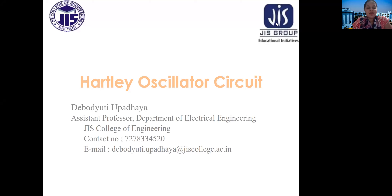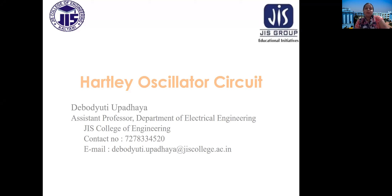Hello students, welcome to a new class of analog electronics. This is a class on different kinds of oscillators. An oscillator, as the name implies, is an instrument that oscillates to produce different types of waveforms. It may be a square waveform, a triangular waveform, or even a sinusoidal waveform. Different types of oscillators, depending upon their operating frequency, will oscillate and produce different types of waveforms.